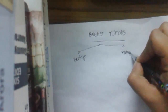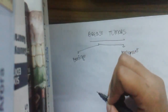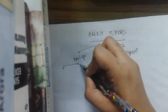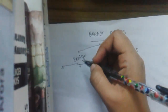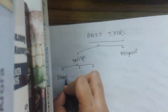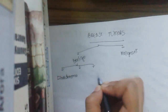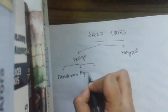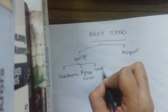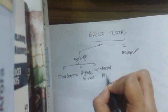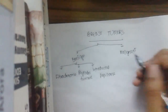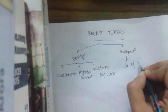Coming to the benign tumors of the breast, there are mainly three basic types. One is fibroadenoma, the second is phyllodes tumor, and the third is intraductal papilloma. The malignant category includes carcinoma of the breast, which is again of many types.